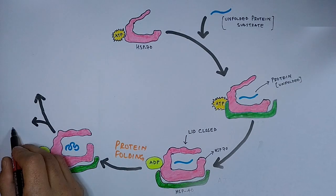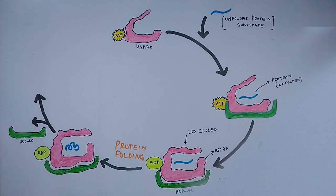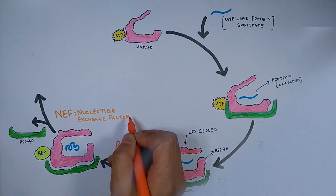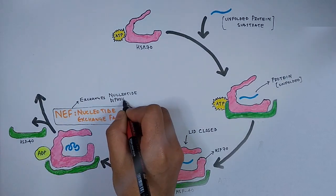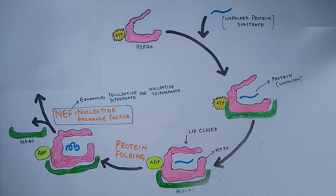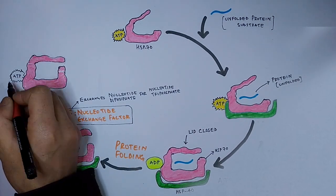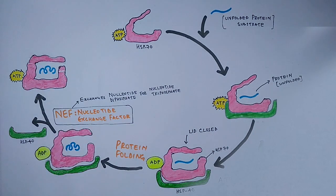In order to do so, first the HSP-40 molecule dissociates from HSP-70, and the NEF, that is the nucleotide exchange factor, works on HSP-70. The NEF mediates the exchange of nucleotide diphosphate with nucleotide triphosphate. So the diphosphate of ADP will be exchanged for triphosphate, and eventually we get ATP bound to HSP-70, as shown in the diagram.